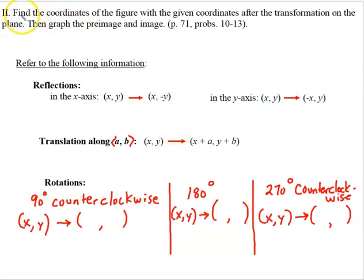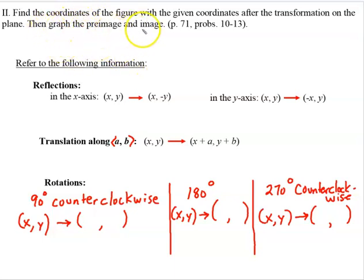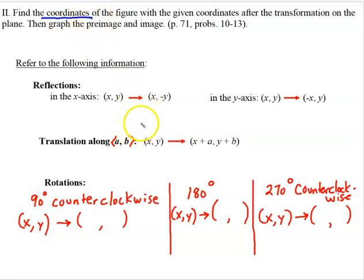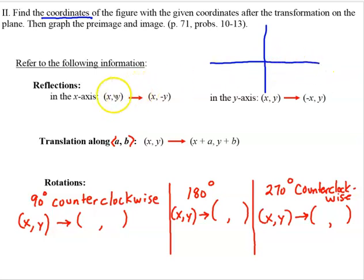Some of your homework will be identifying the type of transformation, and sometimes you'll have more than one illustrated. For part two of your assignment, the instructions read: find the coordinates of the figure with the given coordinates after the transformation on the plane. You're going to be given one of the transformations to perform, then you'll tell what the coordinates would be after that transformation has been performed. Then you're going to graph the pre-image and the image. This is information you want to refer to when doing these problems.